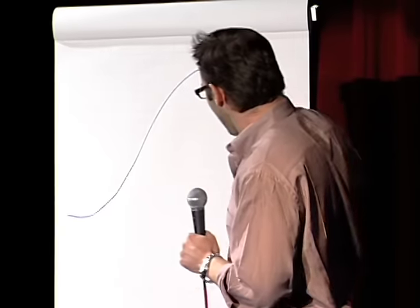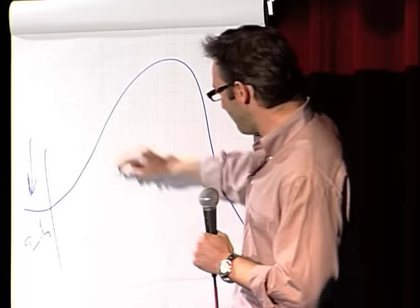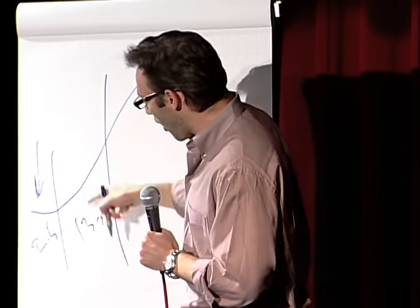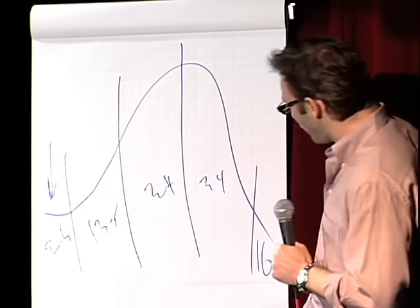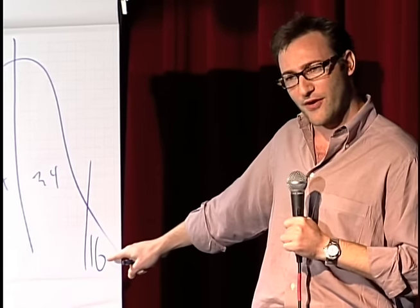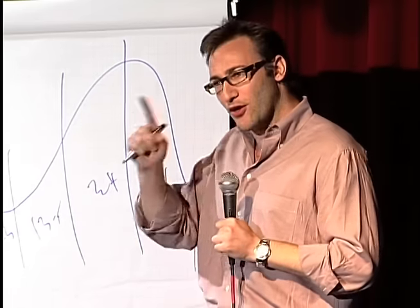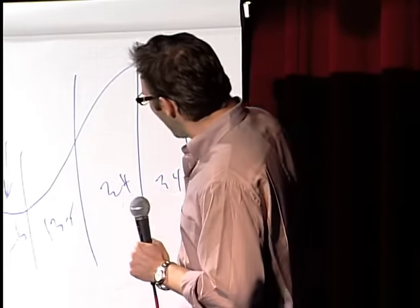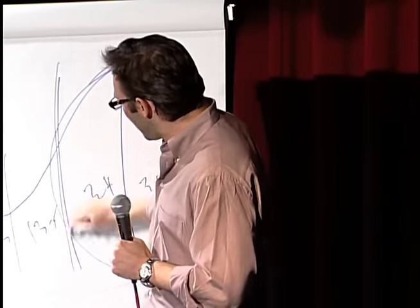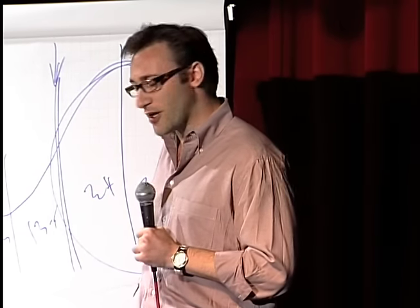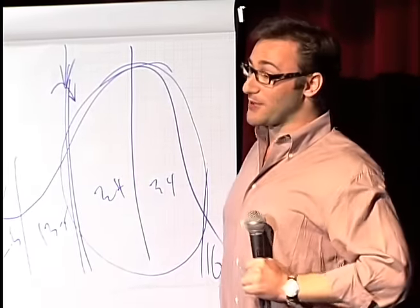Something called the law of diffusion of innovation. And if you don't know the law, you definitely know the terminology. The first 2.5% of our population are our innovators. The next 13.5% of our population are our early adopters. The next 34% are your early majority, your late majority, and your laggards. The only reason these people buy touch-tone phones is because you can't buy rotary phones anymore.